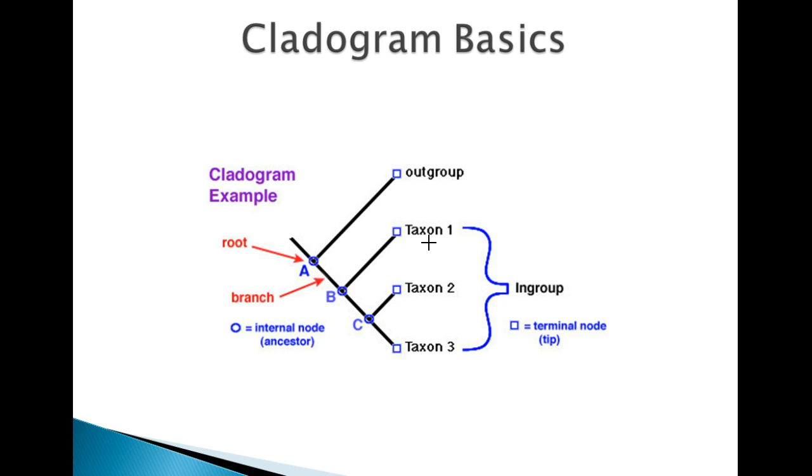You also see the word node. A node corresponds to a hypothetical ancestor. You see an internal node here and a terminal node right here. We'll explain those in a second. But the word node refers to a hypothetical ancestor. In other words, evidence points to this being an ancestor, making it an educated prediction, not a guess.